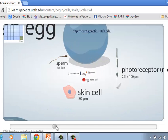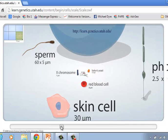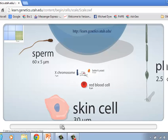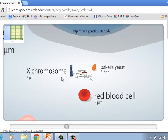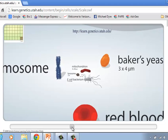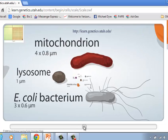We scroll in some more. We've got a red blood cell, baker's yeast, X chromosome which we're going to see split up in 6B. Then we have some other things in here. If we zoom in a little farther, we can see an E. coli bacterium, a lysosome, mitochondria.